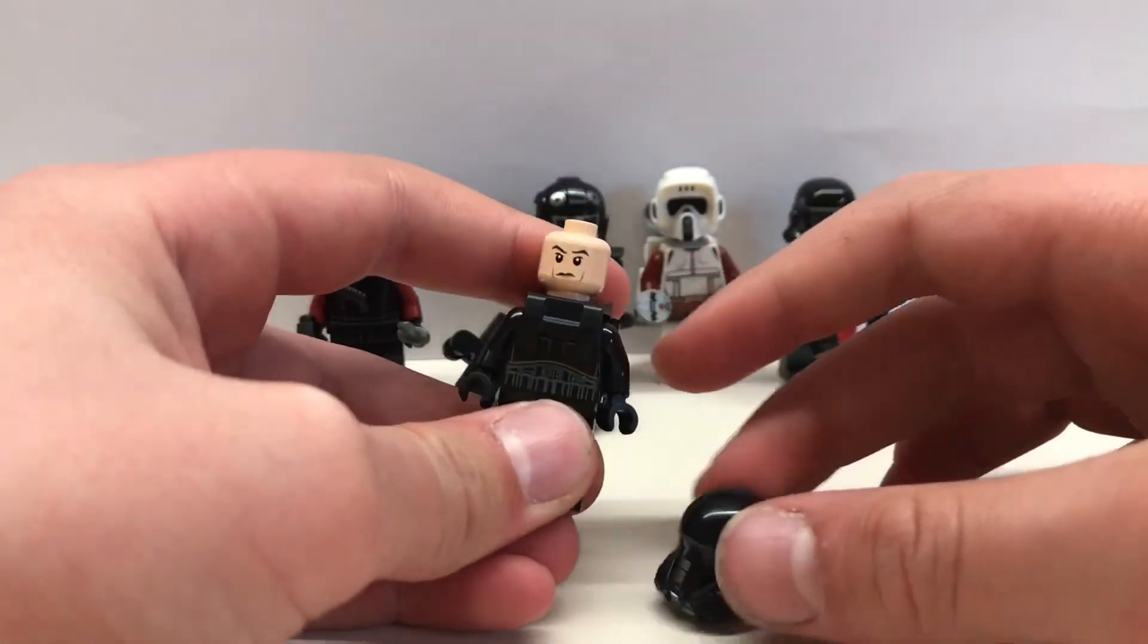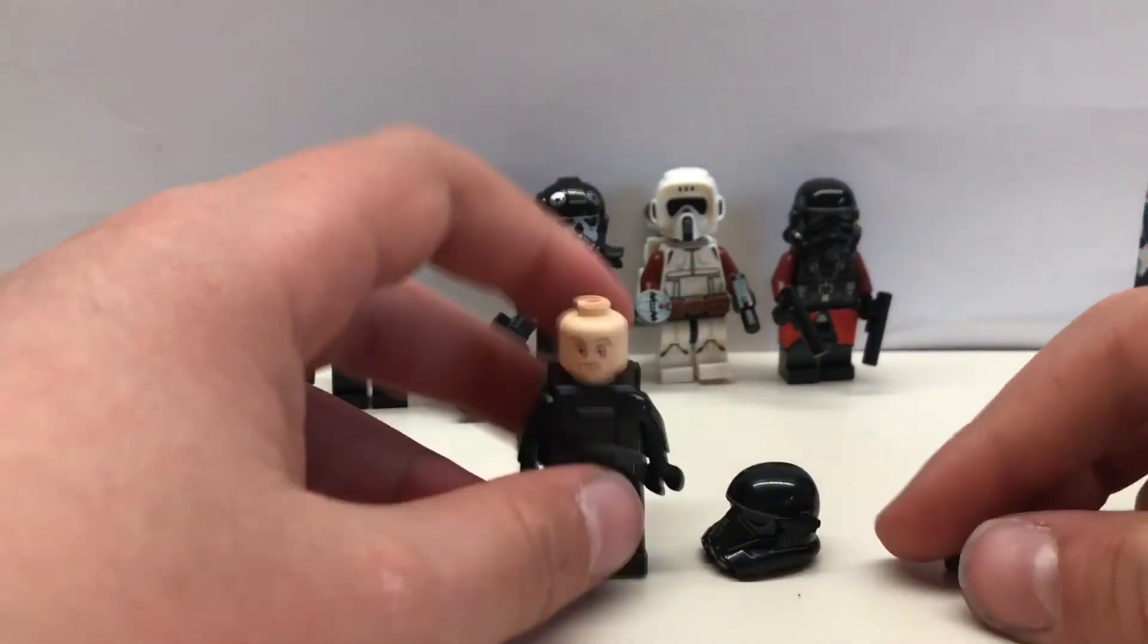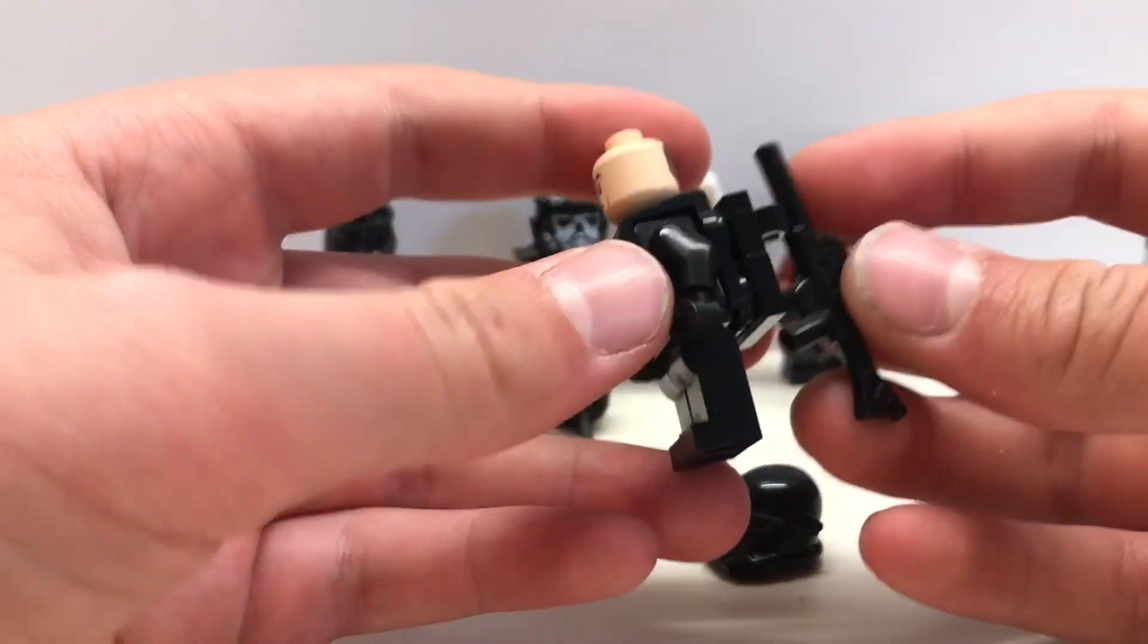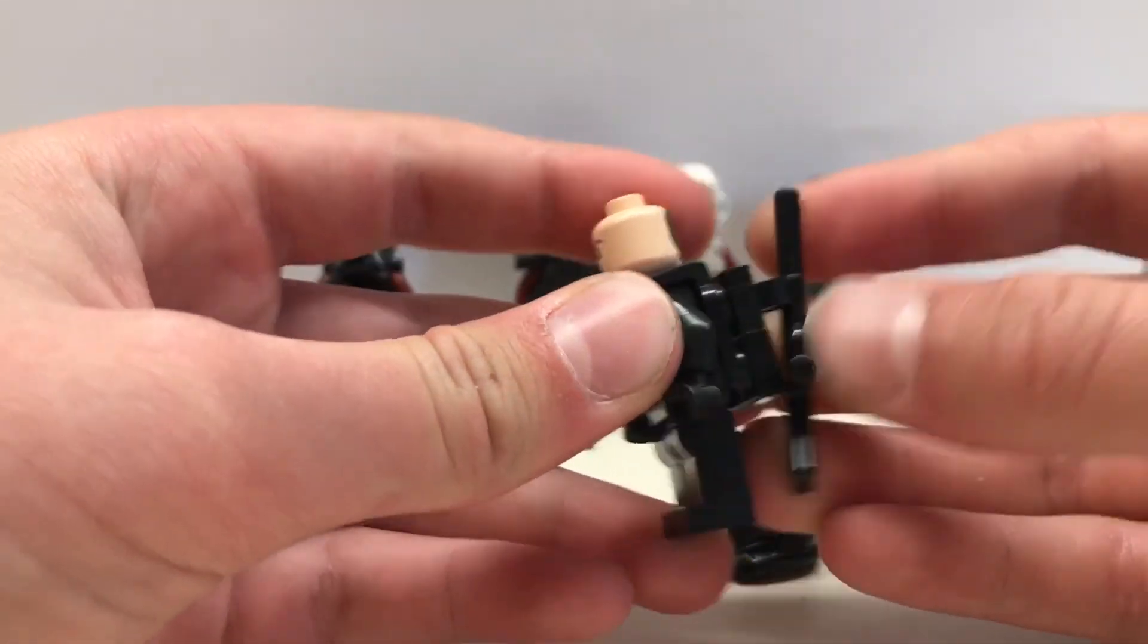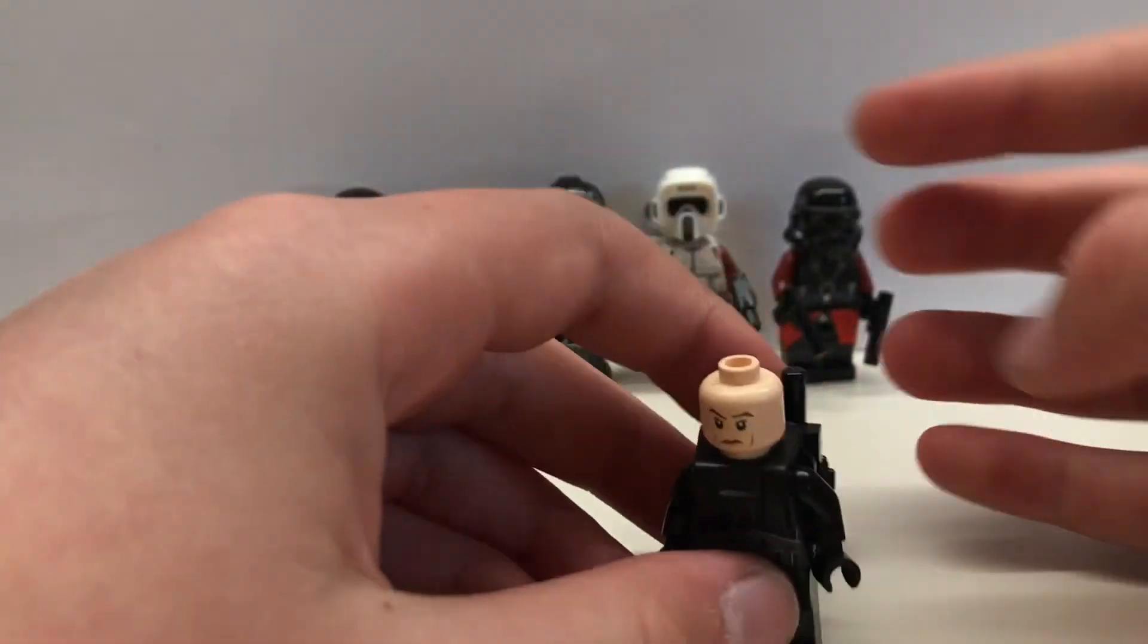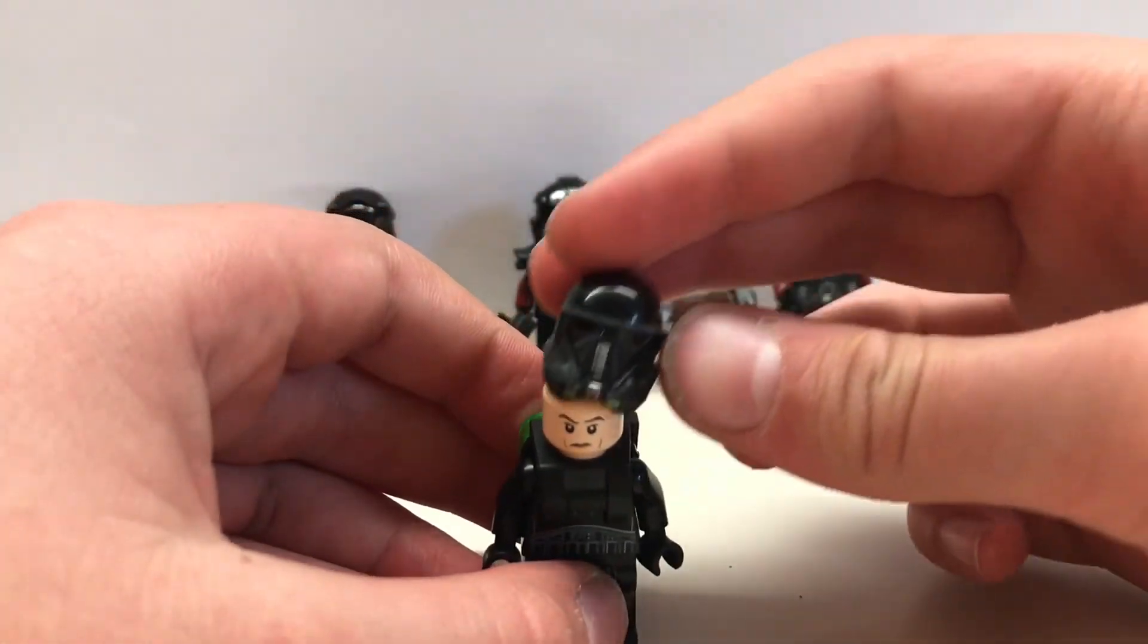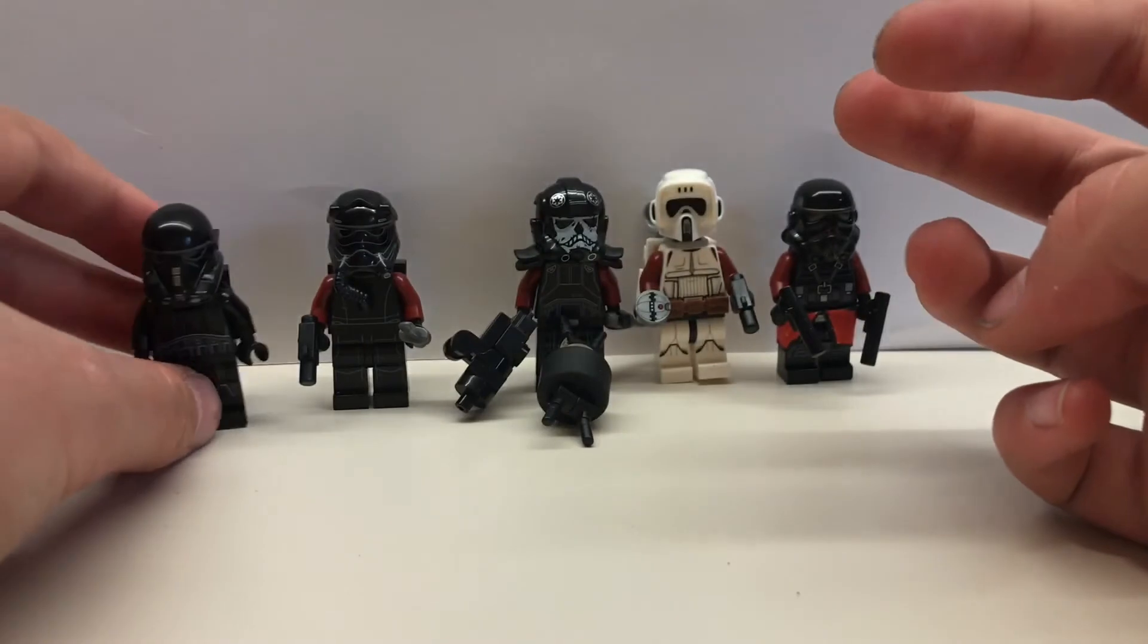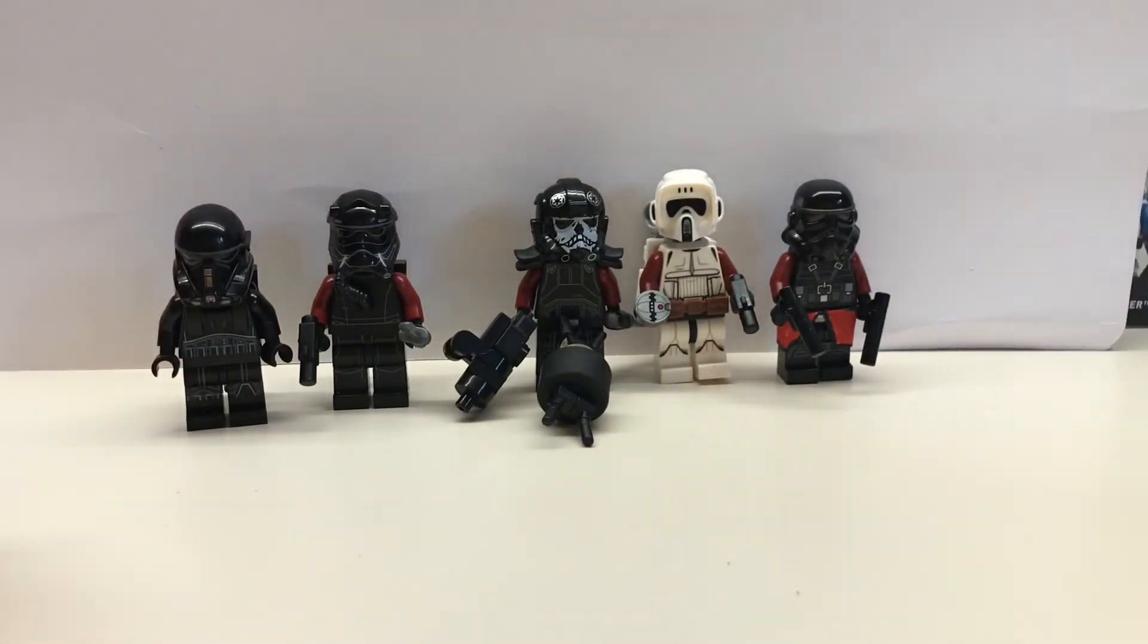And then the head just goes on like so, the rifle clips on if it wants to, and then the First Order Imperial Death Trooper helmet.